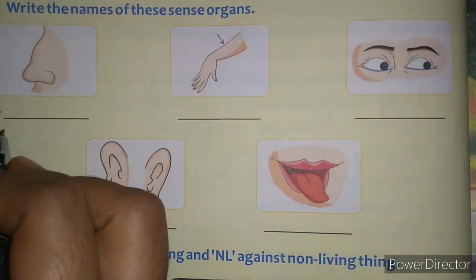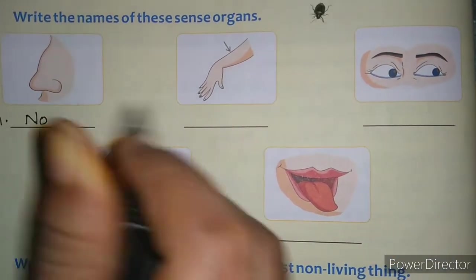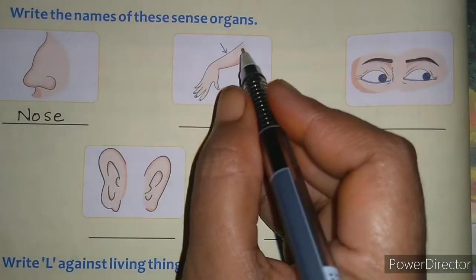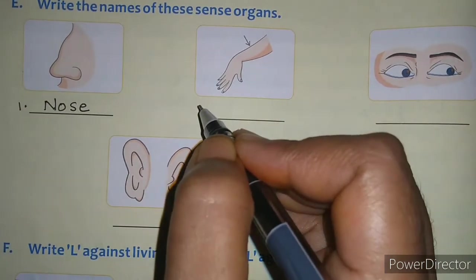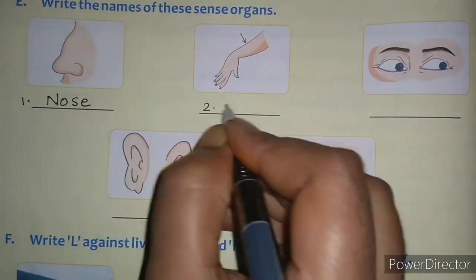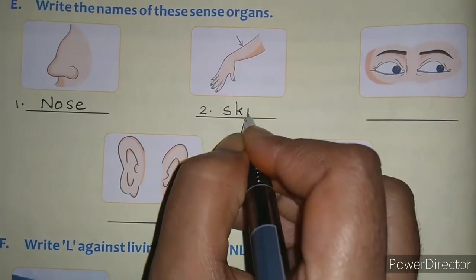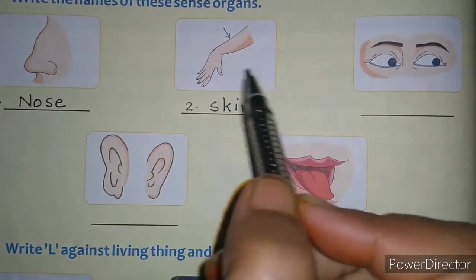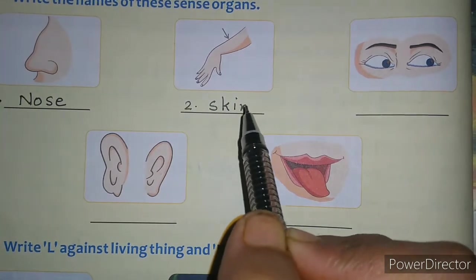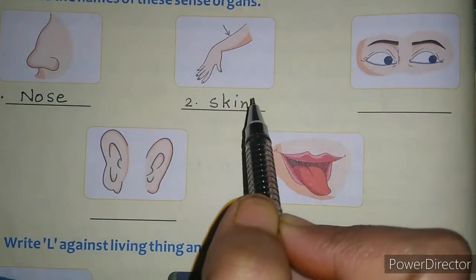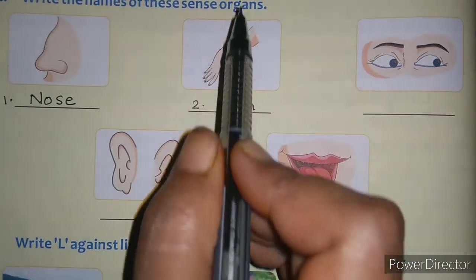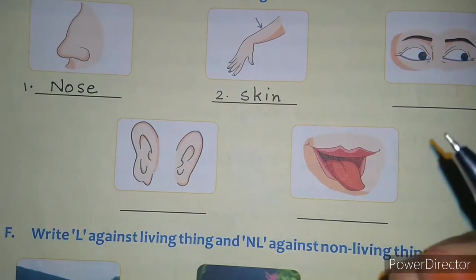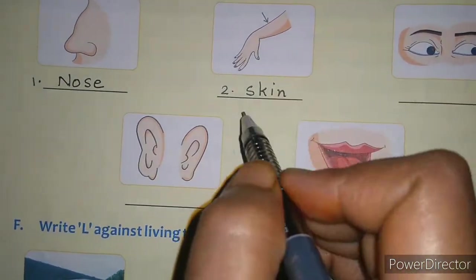First is nose, and we smell with our nose. Second is skin, which covers our whole body. Don't be confused children — this picture is not showing a hand, it is showing skin. Because if you write 'hand' that is the wrong answer, since hand is not a sense organ. Hand is only our body part. So never write leg, hand, or body for the sense organs.